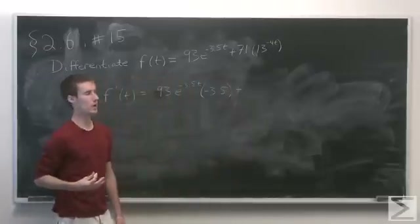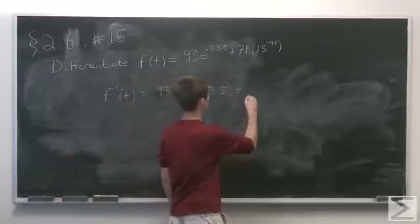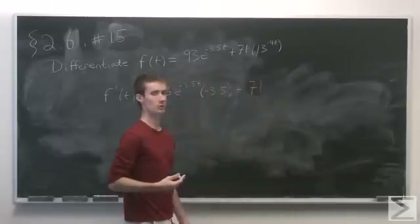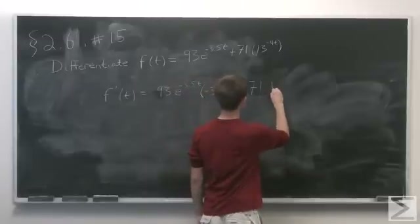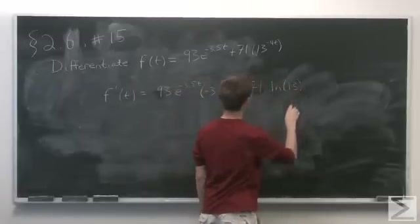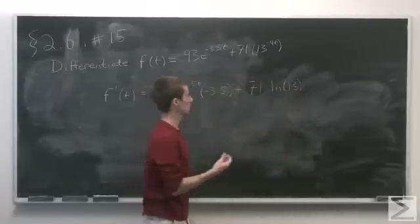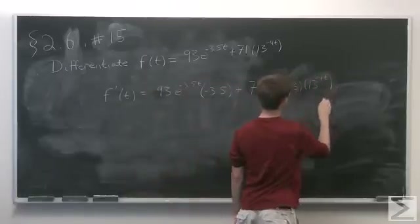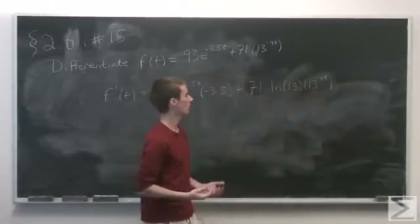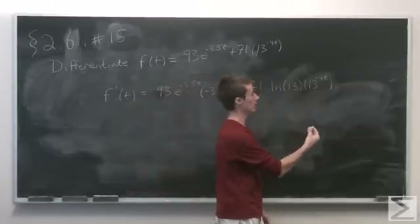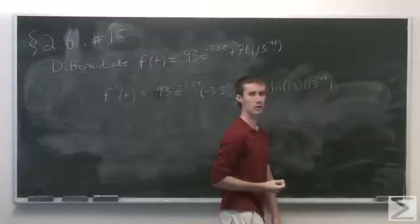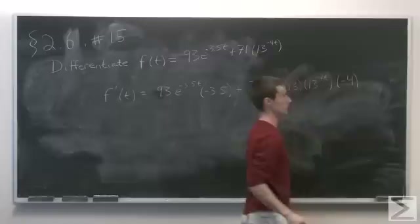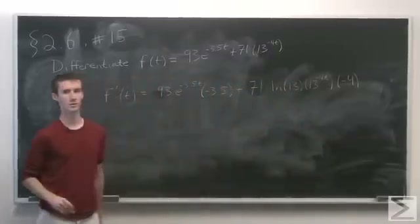For the second term, we have the general exponential function, which means we first copy over the constant 71. Then we multiply by the natural log of our base, 13, and repeat the function 13 to the negative 4t. Finally, we multiply by the derivative of the inside function, which is the derivative of negative 4t, giving us negative 4. And this is the derivative of f.